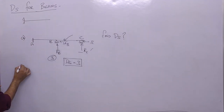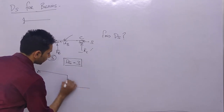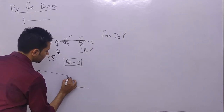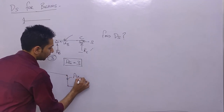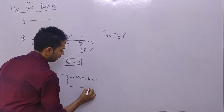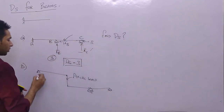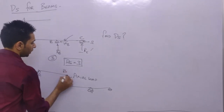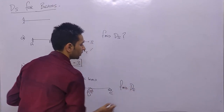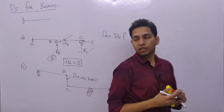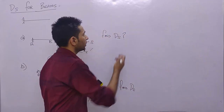A question from beams gives an assembly with axial load-carrying members and specified support conditions at points A, B, C, D, and E. You have to find the degree of static indeterminacy for this structure.